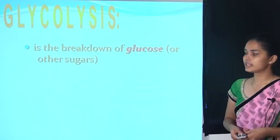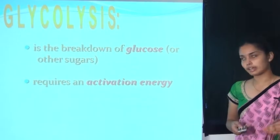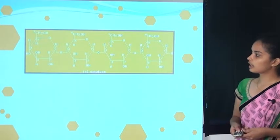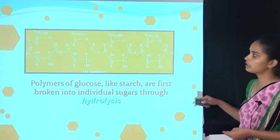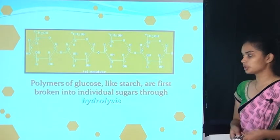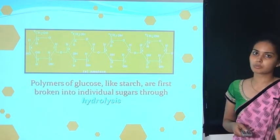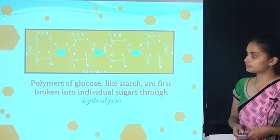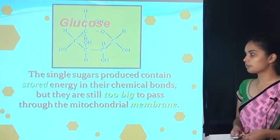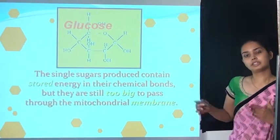What is glycolysis? It is simply the breakdown of the glucose molecule or any other sugar. It requires activation energy and occurs in the cytoplasm. Polymers of glucose like starch are first broken down into individual sugars through hydrolysis — the whole polymer of carbohydrate is broken down into simple sugars like glucose or galactose. The single sugar produced contains stored energy in its chemical bonds, but is still too large to pass through the mitochondrial membrane and needs to be broken down again.